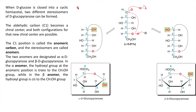When the base abstracts the hydrogen, oxygen carrying a negative charge attacks the carbon with a partial positive charge. The oxygen then abstracts hydrogen to give a hydroxyl group. A new stereocenter is created at carbon 1 position. You can see the hydroxyl group is present on the left side and on the right side, so one chiral center is formed at carbon 1. This carbon 1 is now called the anomeric carbon.